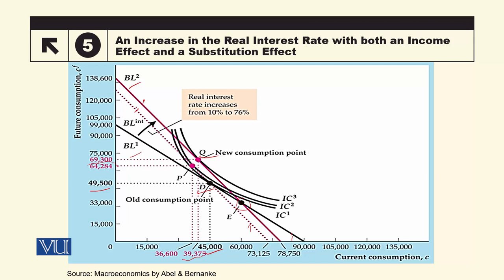D سے P پر کیوں shift ہو رہا ہے — D پر جب پہلے تھا تو interest rate کم تھا، interest rate کے بڑھنے کی وجہ سے budget line change ہو گئی تو وہ P پر shift ہو گیا۔ یہ D سے P تک کی movement یہ pure substitution effect ہے۔ P سے Q پر جو movement ہے — P اور Q دو ایسی budget lines پر ہیں جو parallel ہیں، parallel ہونے کا مطلب دونوں پر interest rate ایک جیسا ہے لیکن higher budget line higher income level کو show کر رہی ہے اور lower dotted line relatively less income level کو۔